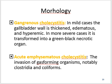The morphology of gangrenous cholecystitis: in mild cases, the gallbladder wall is thickened, edematous, and hyperemic, and in more severe cases it is transformed into a green-black necrotic organ. In acute emphysematous cholecystitis, invasion of gas-forming organisms, notably Clostridia and coliforms, results in this condition.